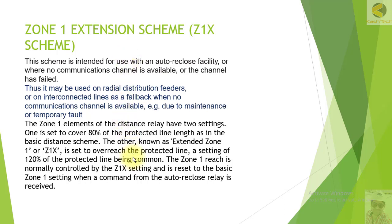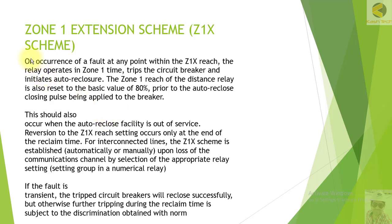Zone 1 is extended up to 120% in the first attempt. When the auto-reclose does reclosing, it is reset back to 80%. This scheme is useful where you don't have any communication scheme available but still want fast tripping. Fast tripping and system stability are the first priority here. This scheme is used on occurrence of a fault at any point within the Z1X reach.